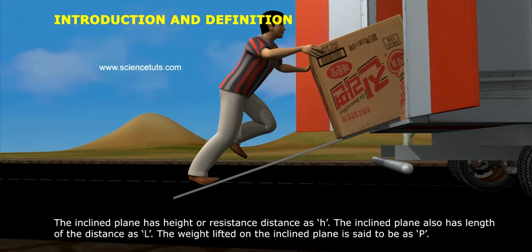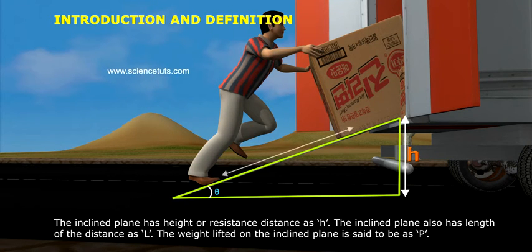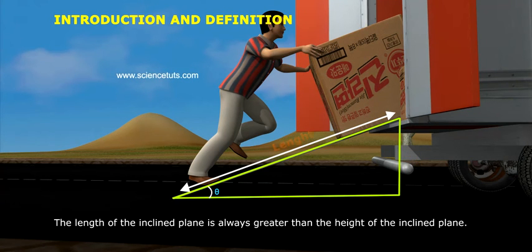The inclined plane has height or resistance distance as H. The inclined plane also has length of the distance as L. The weight lifted on the inclined plane is said to be as P. The length of the inclined plane is always greater than the height of the inclined plane.